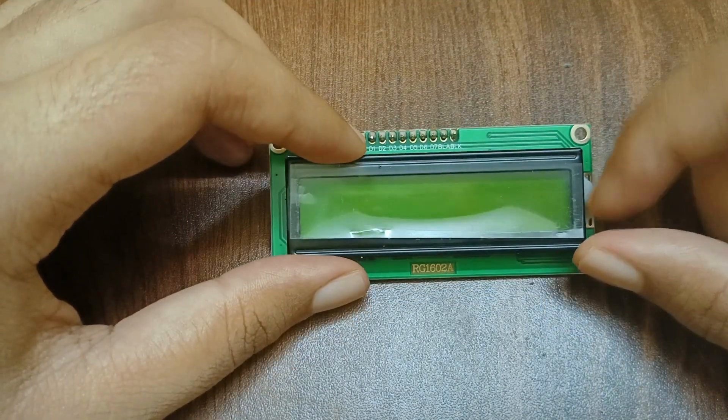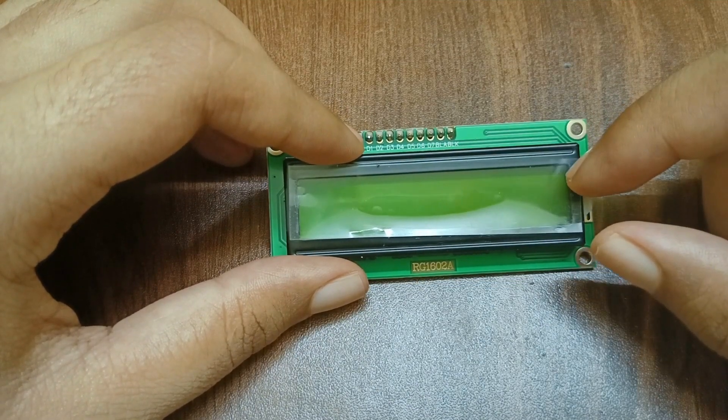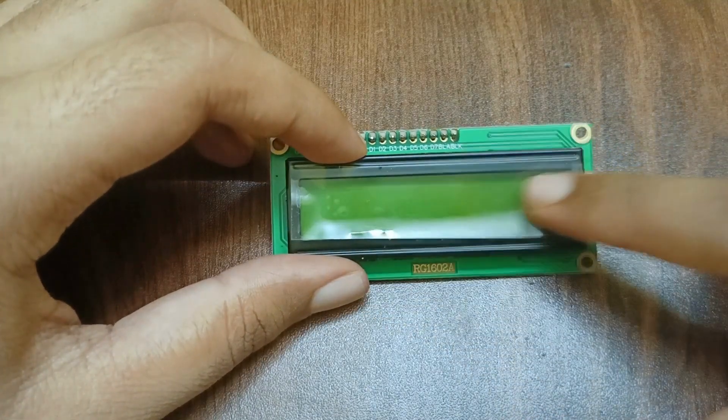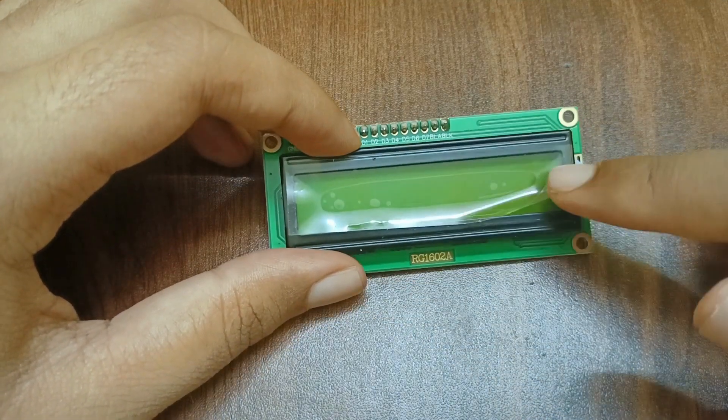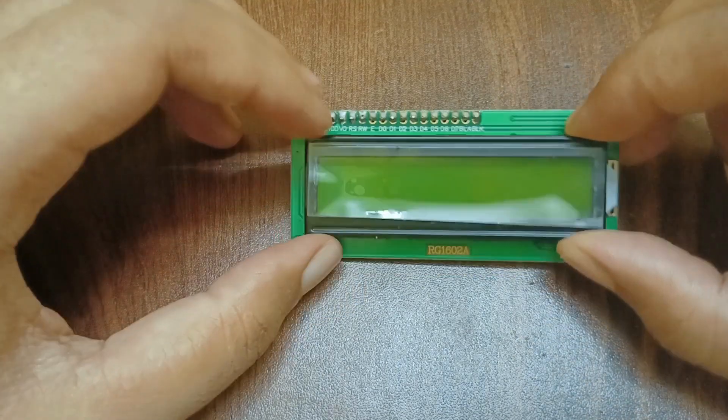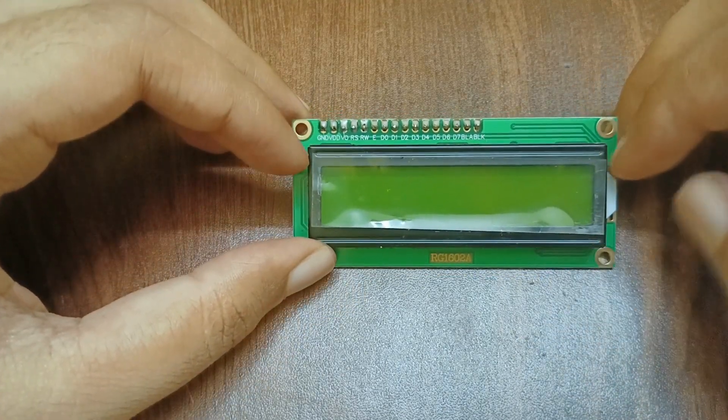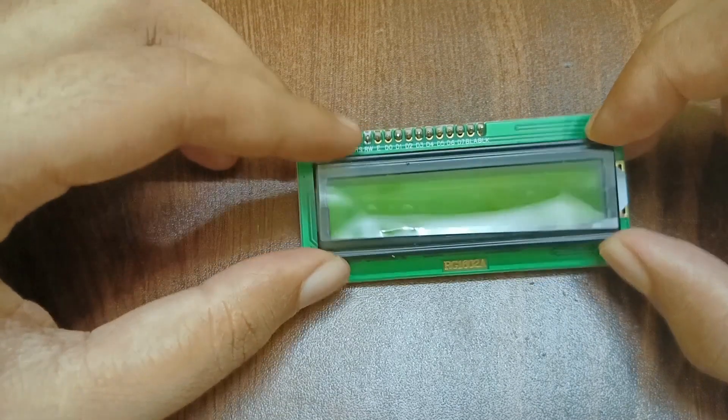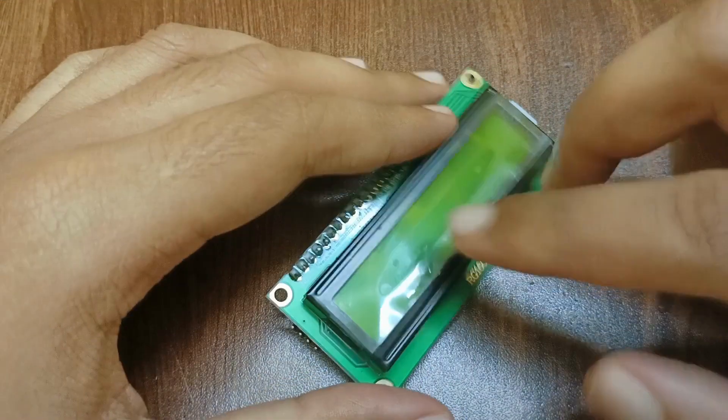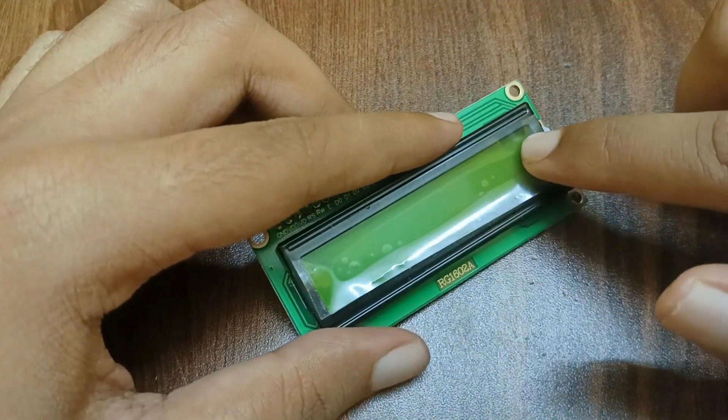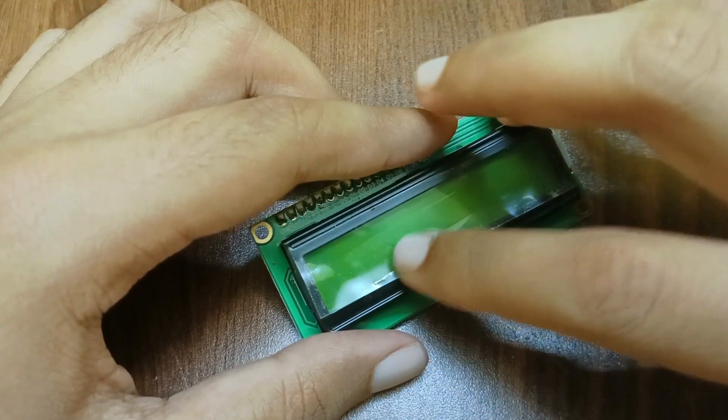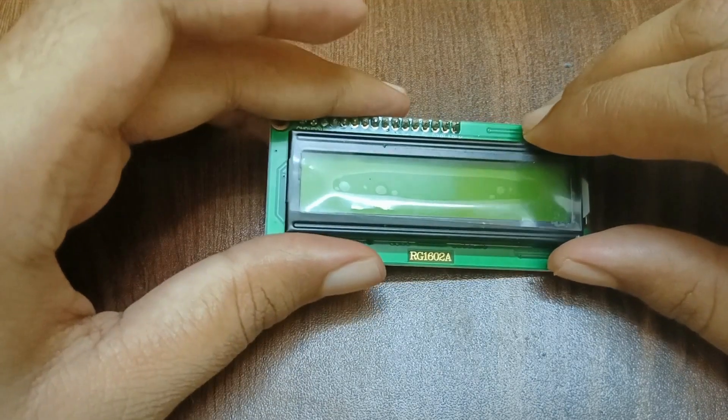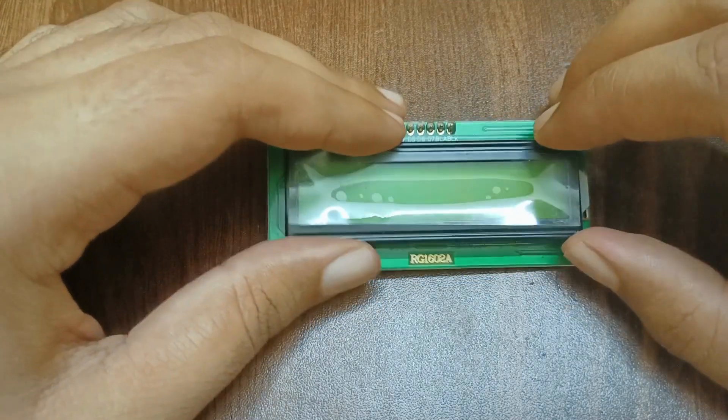So 16x2, that means it has 16 columns and two rows. As you can see, this is larger width-wise and shorter length-wise. So it has 16 columns and two rows. In total, it can handle 32 characters at a time.